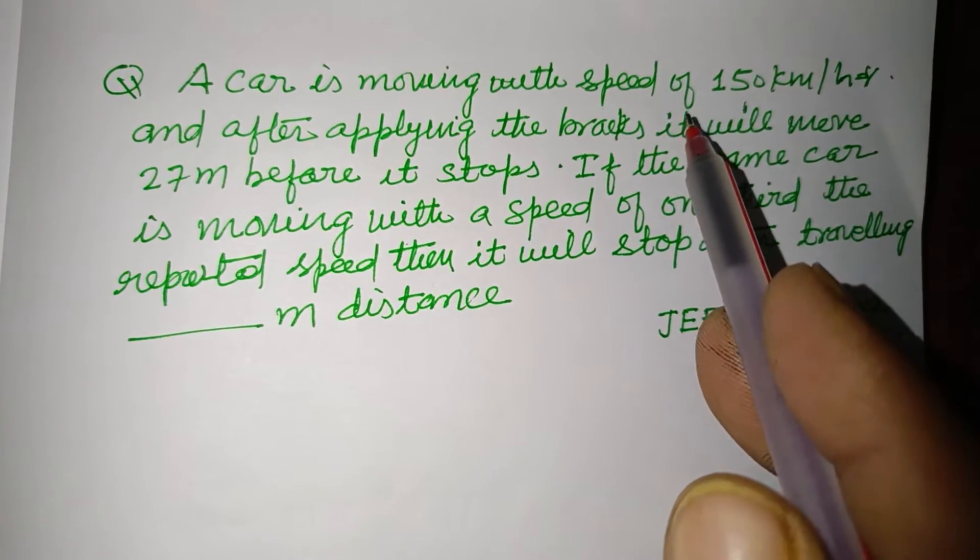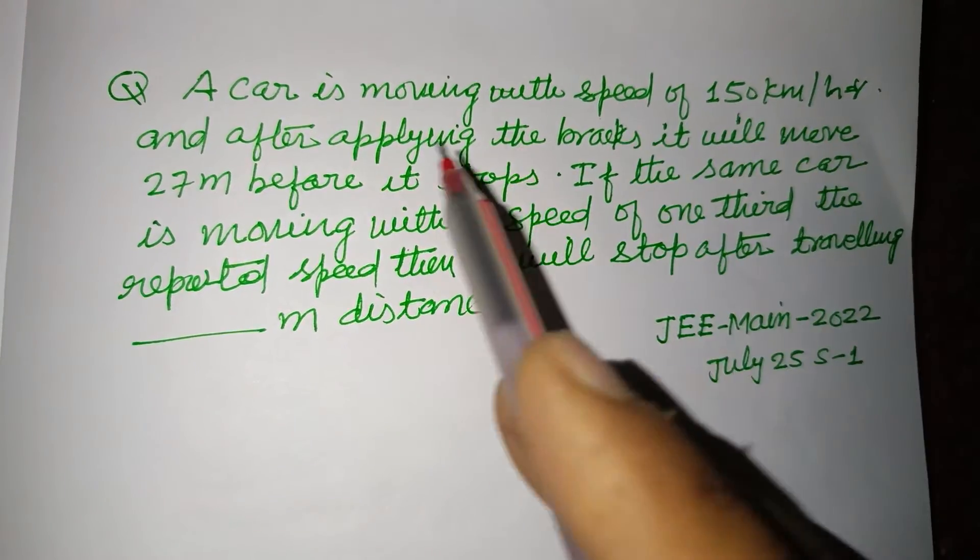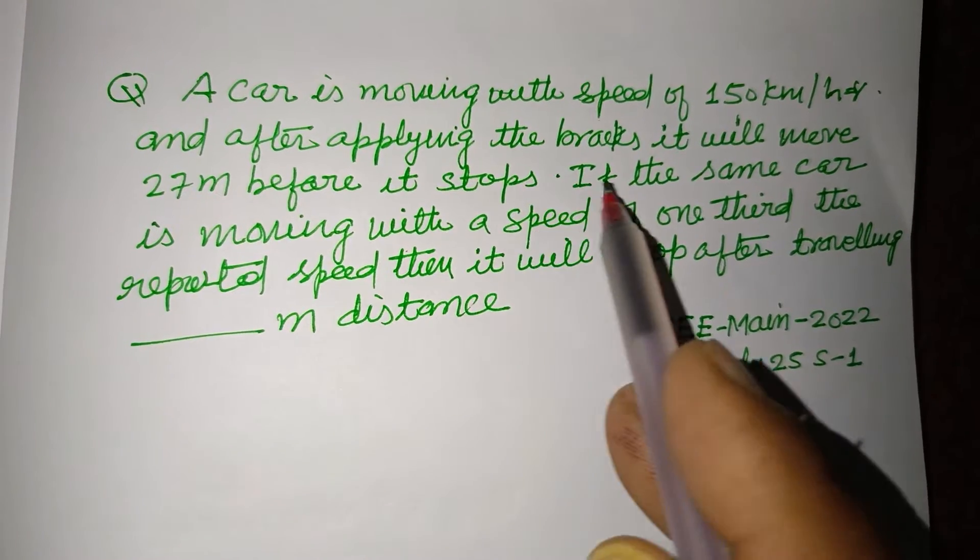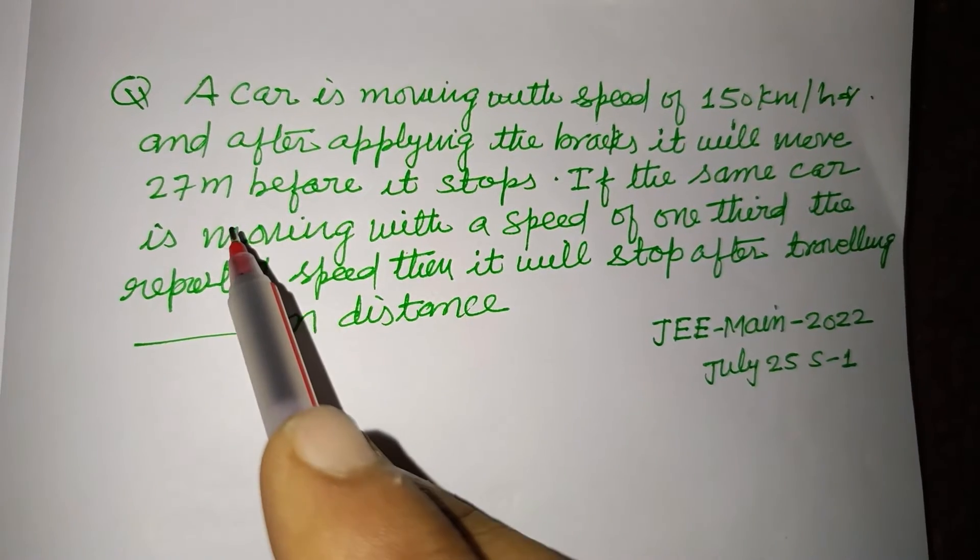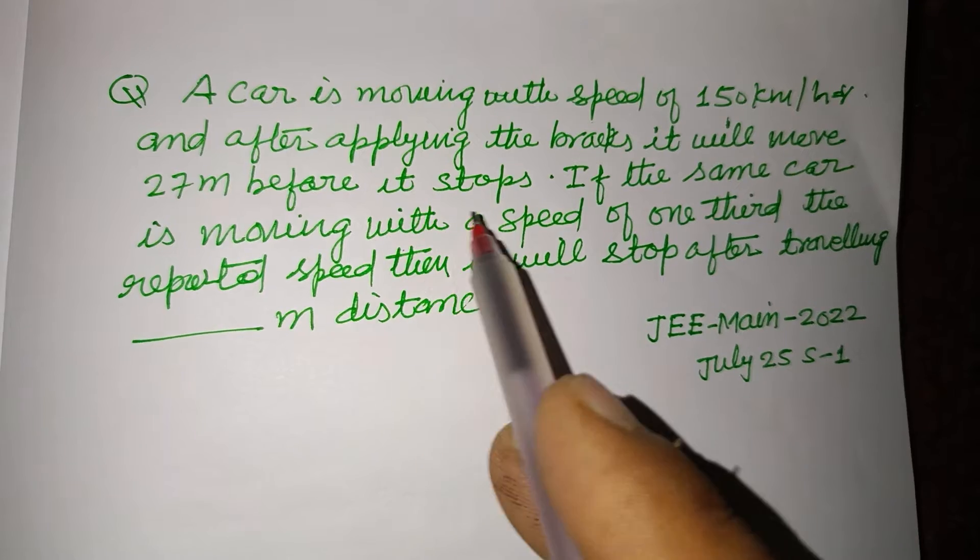A car is moving with a speed of 150 km per hour and after applying the brakes it moves 27 meters before it stops.